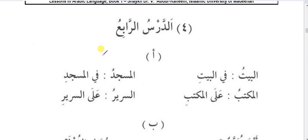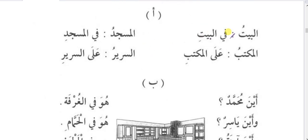Chapter 4, Ad-Darsur-Rabi: In this chapter we learn about harfajar. Al-baytu means 'the house'; fil-bayti means 'in the house.' We will learn two harfajar: fi, meaning inside or in, and ala, meaning on or on top of. These two are harfajar. A harfajar always comes before an ism and gives kasra to the next word.